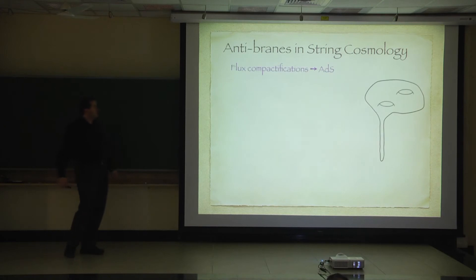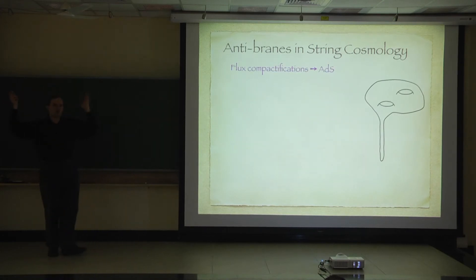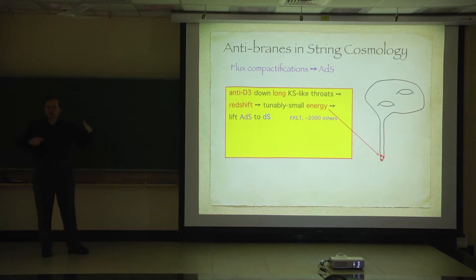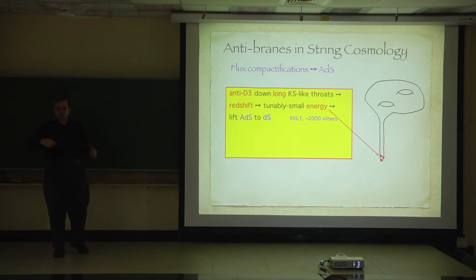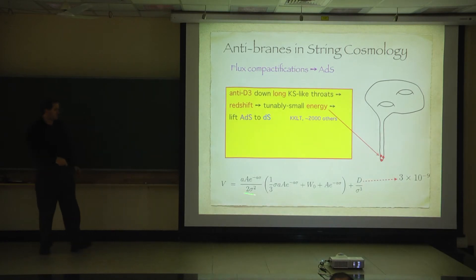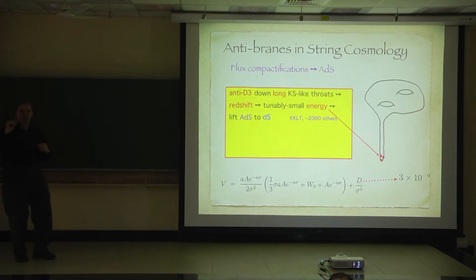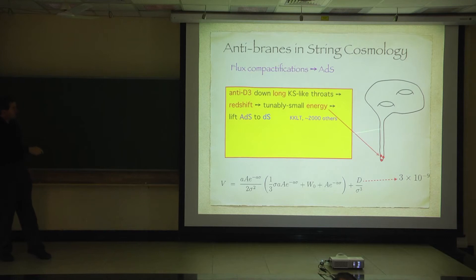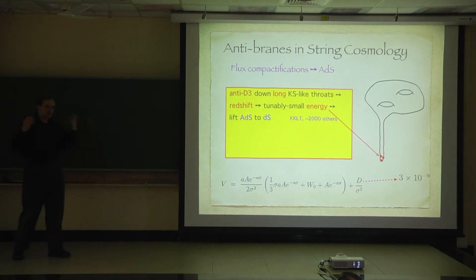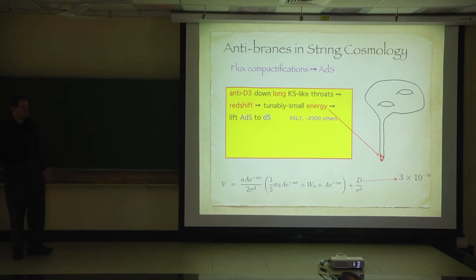In cosmology, what you do: you compactify string theory on some Calabi-Yau, you get an AdS solution, and then you put some anti-D3 branes down some long throat. They have a small energy and you use these anti-D3 branes to uplift the cosmological constant a tiny bit. This is from KKLT — there's a term which goes like 10 to the minus 9, coming from the anti-D3 branes. You need a very small term to uplift the cosmological constant without decompactifying the solution and screwing up moduli stabilization.